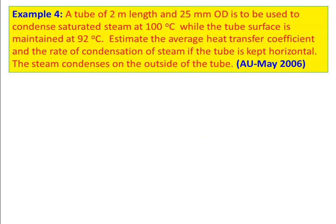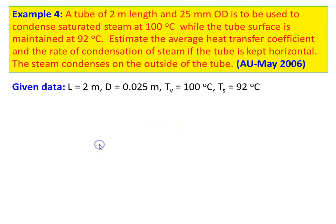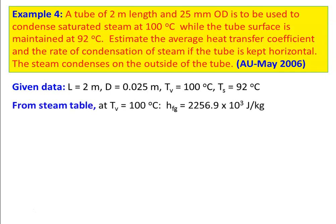Example number 4, from question paper May 2006: A tube of 2 meter length and 25 mm outer diameter is to be used to condense saturated steam at 100°C where the tube surface is maintained at 92°C. Estimate the average heat transfer coefficient and rate of condensation of steam if the tube is kept horizontal. The steam condenses on the outside surface of the tube. Given data: L = 2 m, D = 0.025 m, vapor temperature Tv = 100°C, surface temperature Ts = 92°C. From steam table: HFG = 2256.9 × 10³ J/kg.